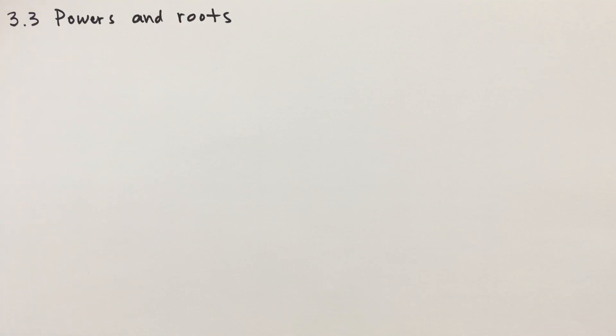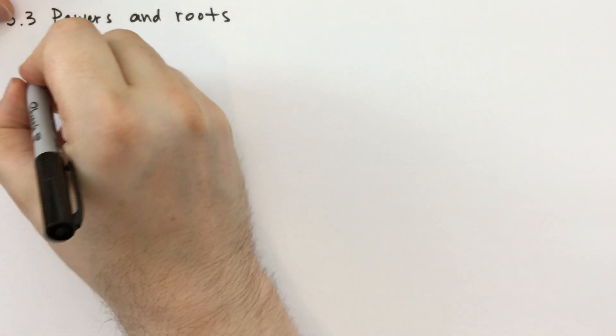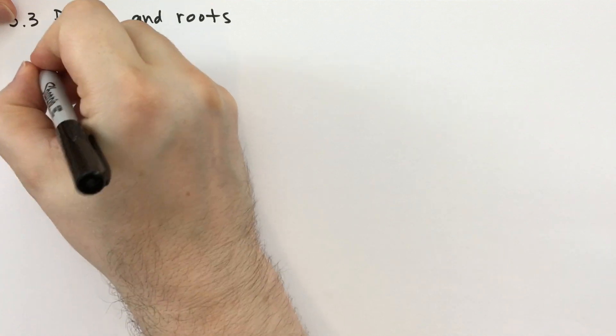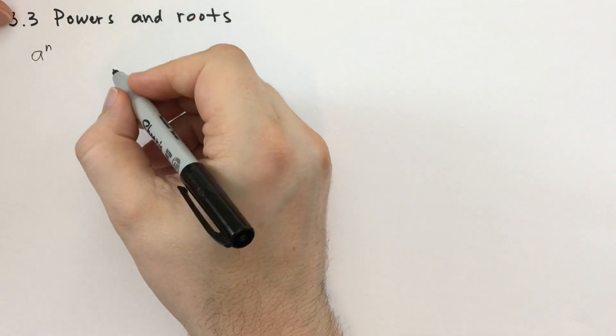Hey guys, welcome back. This is Jonathan Gardner covering Sergey Lang's Basic Mathematics, section 3 of chapter 3. Chapter 3 is real numbers, and this is powers and roots. Let's go back in time to when we first talked about this notation where we had some number with n as a superscript.